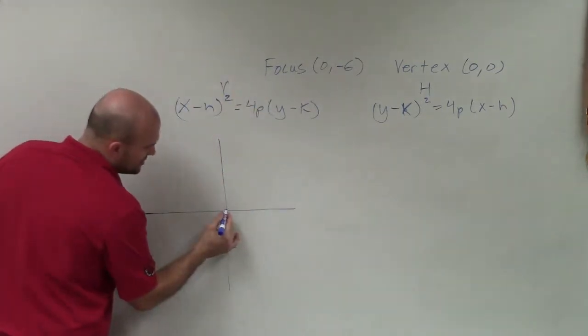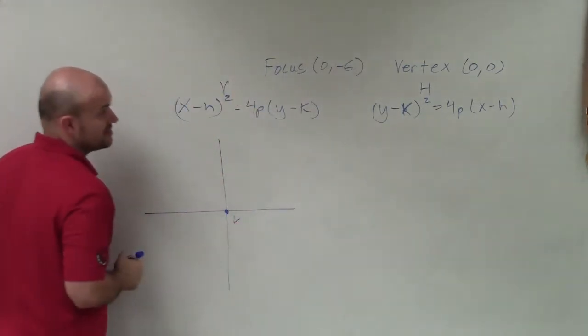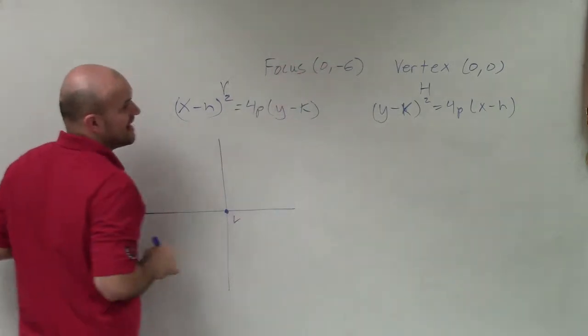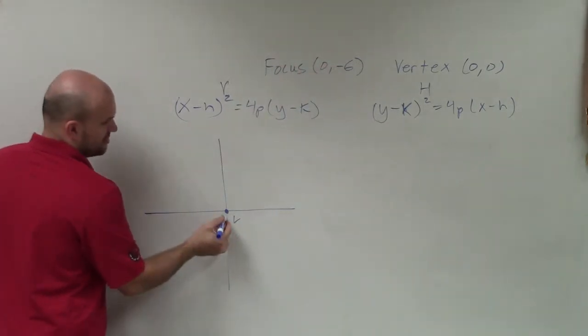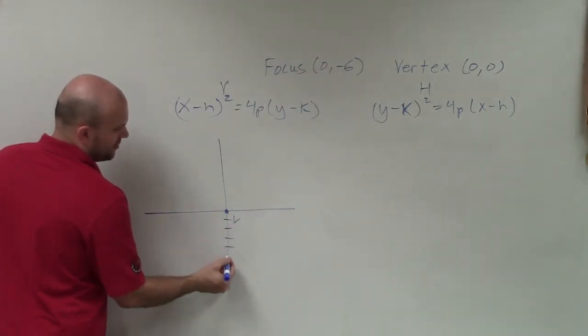We know the vertex is at (0, 0), so I'll plot the vertex at (0, 0). Then my focus is at (0, -6), so I'm going to go 1, 2, 3, 4, 5, 6.